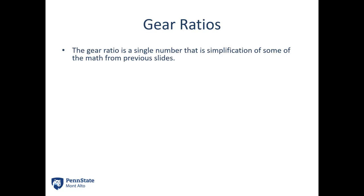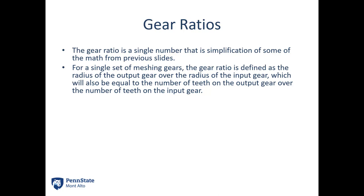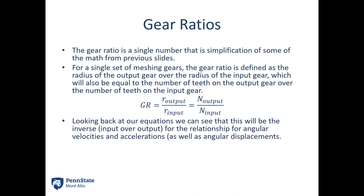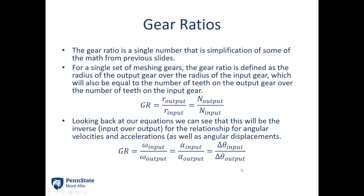All of this comes together with gear ratios. A gear ratio is a single number that simplifies the math. For a single meshing gear pair, the gear ratio is defined as the radius of the output gear over the radius of the input gear, which equals the number of teeth on the output over the number of teeth on the input — useful because you can just count the teeth. Looking back at the equations, the gear ratio is also the inverse of the angular velocities, accelerations, or displacements: gear ratio equals omega_input over omega_output.